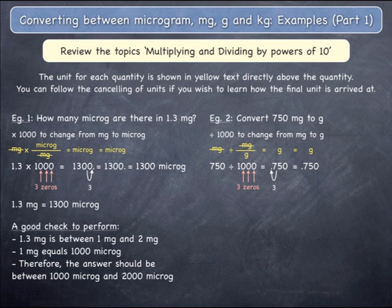The units of milligrams cancel, leaving only grams, which becomes a final unit. 750 milligrams equals 0.75 grams.